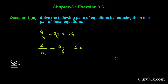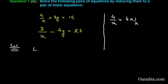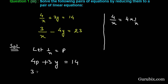We can write 4/x as 4 times (1/x). So we let 1/x equal p. Then our first equation becomes 4p + 3y = 14, and our second equation becomes 3p - 4y = 23. This is equation number 1 and equation number 2.